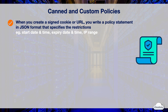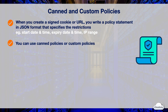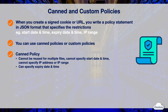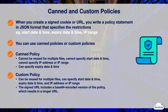When you create a signed cookie or URL, you write a policy statement in JSON format that specifies the restrictions — for example, the date and time users can begin to access your content, the expiry date and time, and the IP address or IP range of the users who can access your content. You can use either a canned policy or a custom policy. A canned policy is a predefined policy with a specific subset of custom policy, which is simpler than a custom policy. A custom policy is more flexible. With a canned policy, you cannot reuse the policy statement for multiple files, can only specify the expiry date and time but not the start date, and cannot specify an IP address or IP range. With a custom policy, you can reuse the policy statement for multiple files and specify start and expiry date and IP address or IP range. The signed URL contains a base-64 encoded version of the policy, which results in a longer URL.